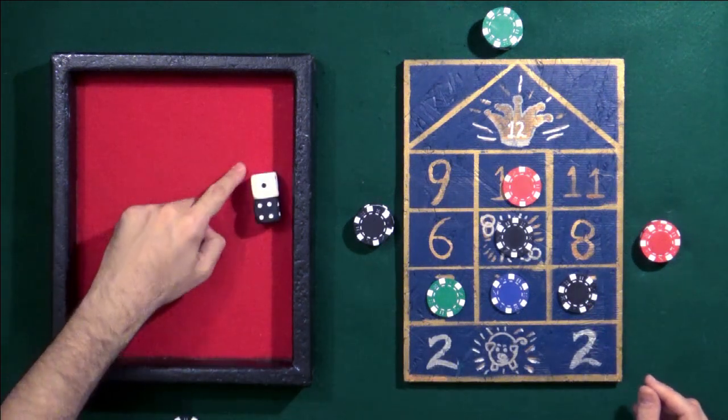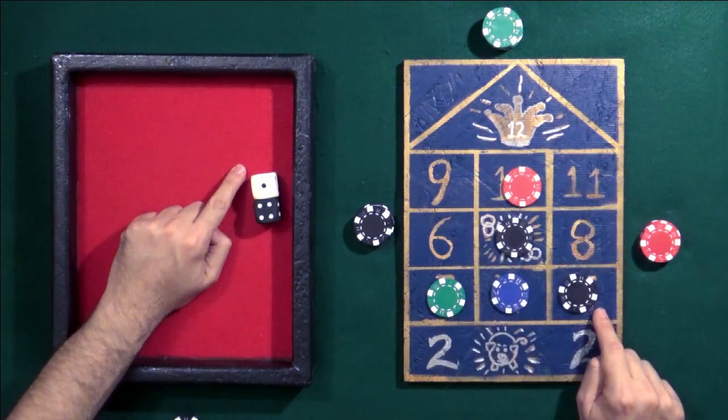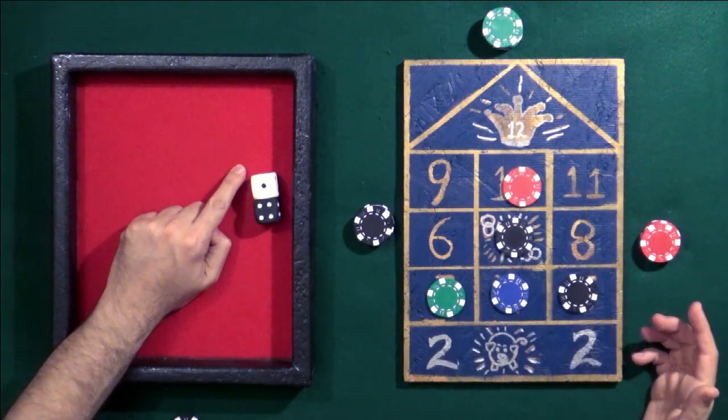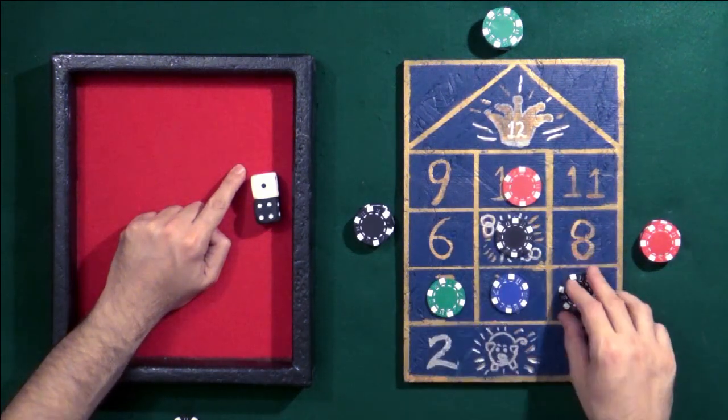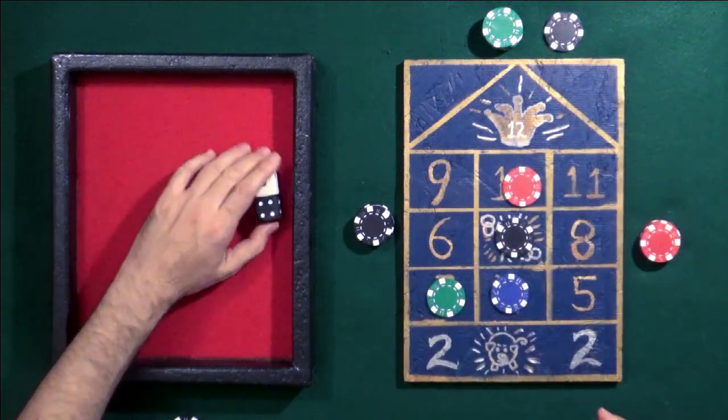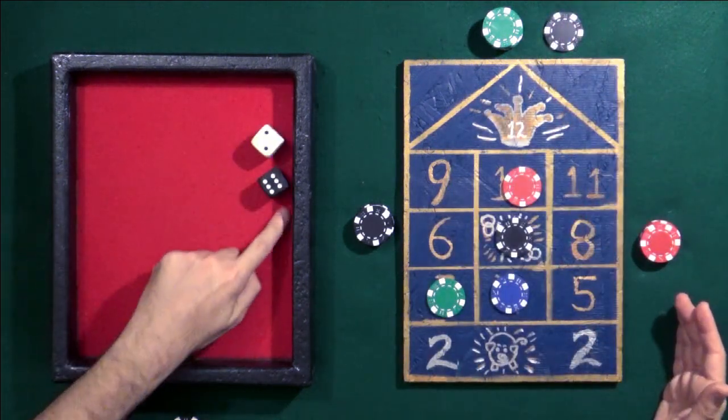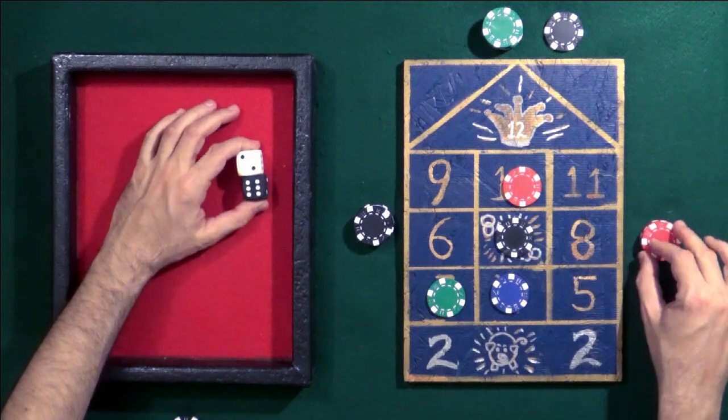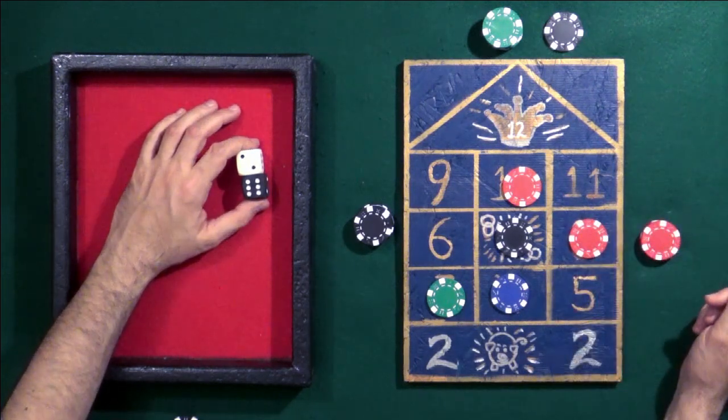Green rolled a five. Now since there's a chip on five, it's not empty. They don't place. Green would take. Now back to red. Red rolled an eight. There's nothing on eight, so they place. And that's basically how the game goes.